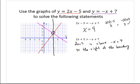The boundary is at x equals 4. So to the right of the boundary means x is greater than 4, and that is the solution of the inequality. Notice that it has that same boundary value, 4. The solution of the equation and the solution of the inequality are related — the solution for the equation will show up in the solution of the inequality. Let's see another example of that.